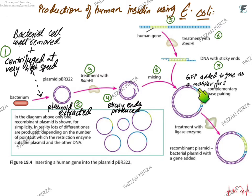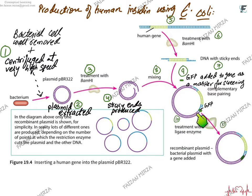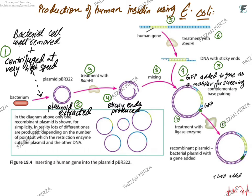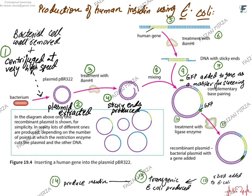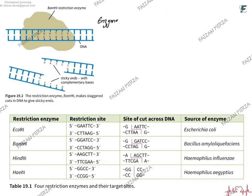The GFP — green fluorescence protein — gene is also added to the plasmid as a marker for screening. The enzyme ligase is then added: ligase glues the GFP gene and the human insulin gene together into the PBR322 plasmid, and the ring closes up to form the recombinant plasmid. This recombinant plasmid is added back into E. coli. Transformed E. coli can be screened by observing green fluorescence, then grown in fermenters to produce insulin in large quantities.